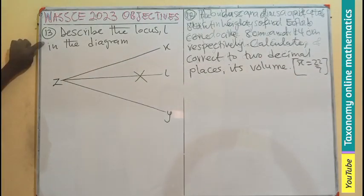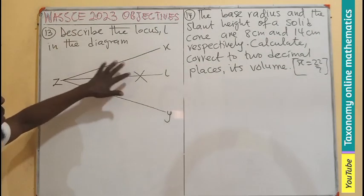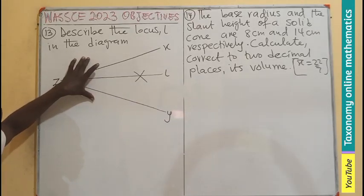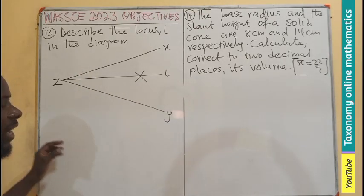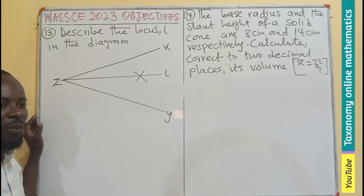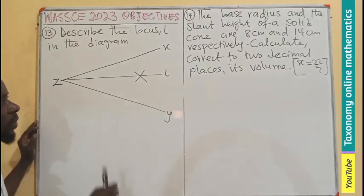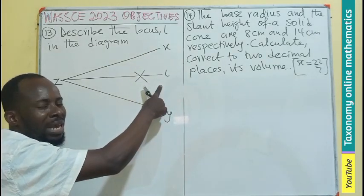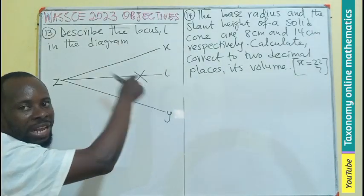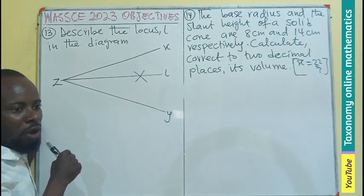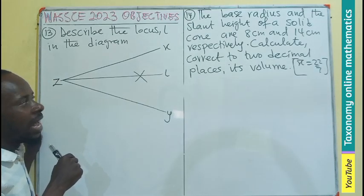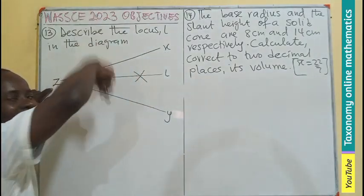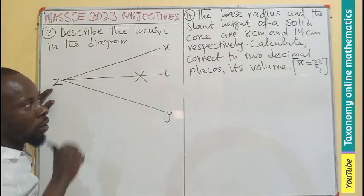Question 13. We are going to describe the locus L in this diagram. Option A says the locus of a point equidistant from x and y. That would be a bisector of a line, so that is an answer. Options B and C discuss equidistant from x, y, and other points, but we can see x, y has no line.